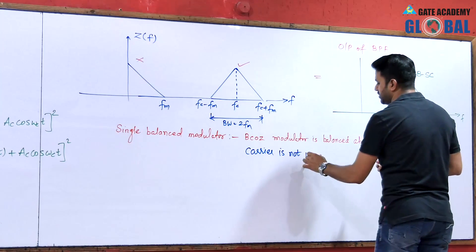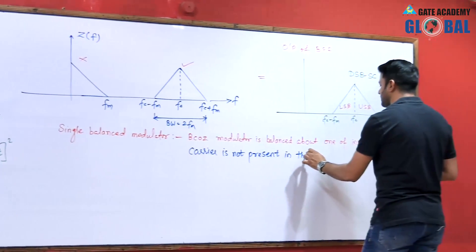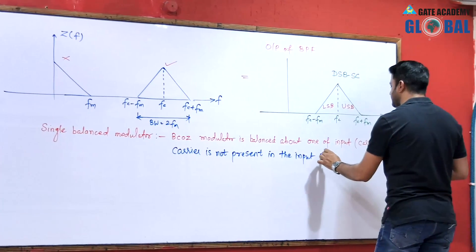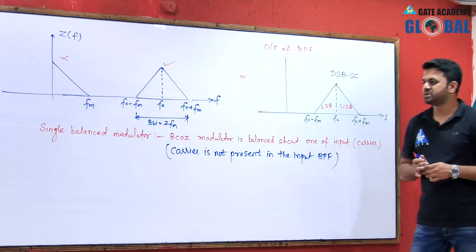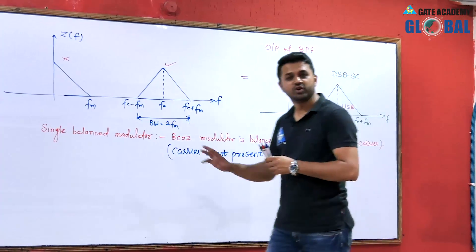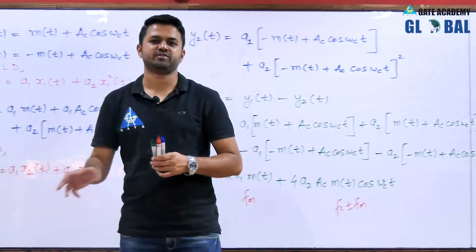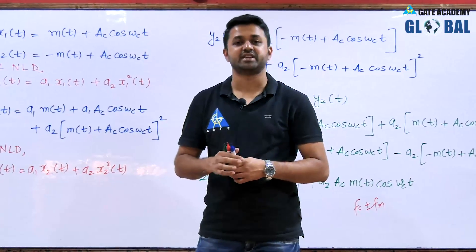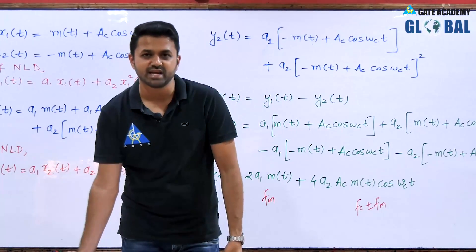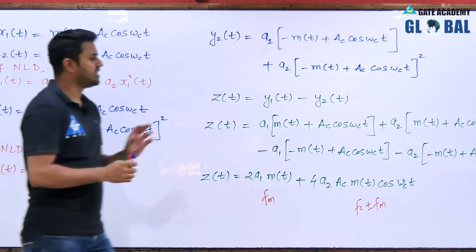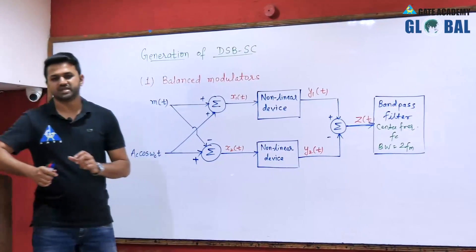The carrier is not present at the input of the bandpass filter. In a double balanced modulator, both inputs would be absent at the bandpass filter input — we will see this in the next method. If both inputs given to the device are absent at the bandpass filter input it is called a double balanced modulator. This concludes the balanced modulator, which generates double sideband suppressed carrier.